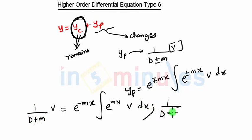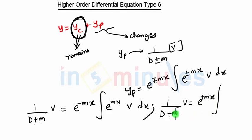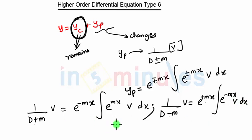Similarly, 1/(D−m) into v gives e^(+mx) integration of e^(−mx) · v dx, because we want the opposite sign. These are the two solutions for yp in Type 6. This will be more clear when we see the problem.